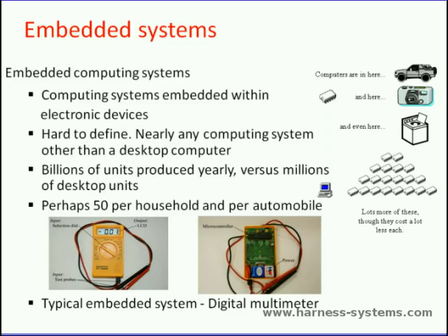There are billions of units produced yearly compared to millions of desktop units, perhaps 50 per household and per automobile. Typically, an Embedded System, when compared with other devices, consumes low power, is small in size, rugged in operating range, and cheaper in cost.